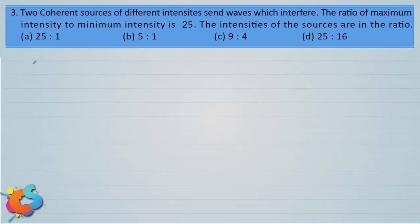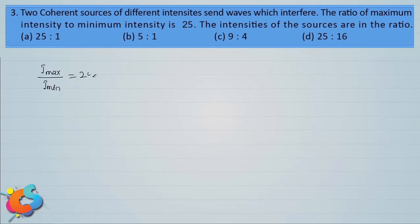Let's go to the next question. Two coherent sources of different intensities send waves which interfere. The ratio of maximum intensity to minimum intensity is 25. We are asked to find the ratio of intensities of the sources, that is I1 by I2. It is given that Imax divided by Imin is equal to 25.